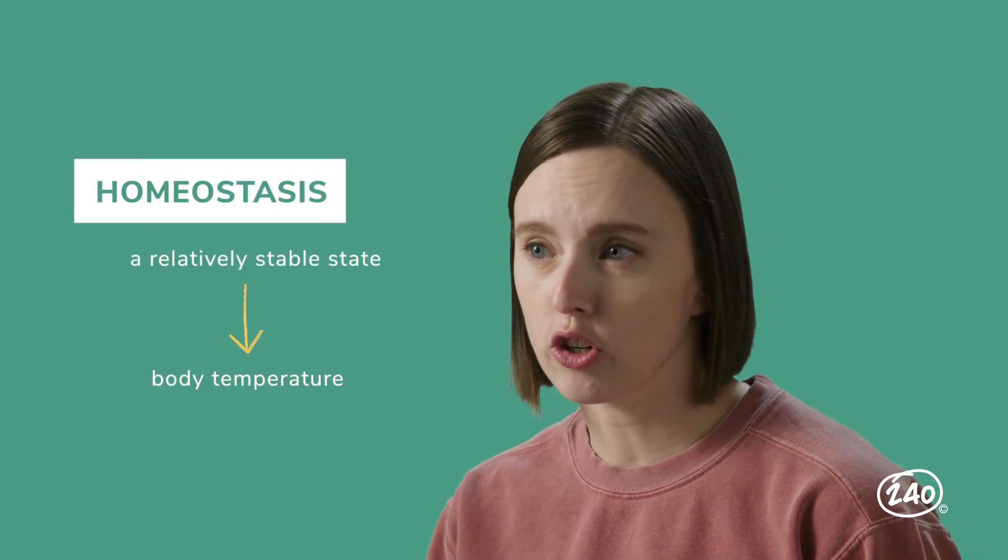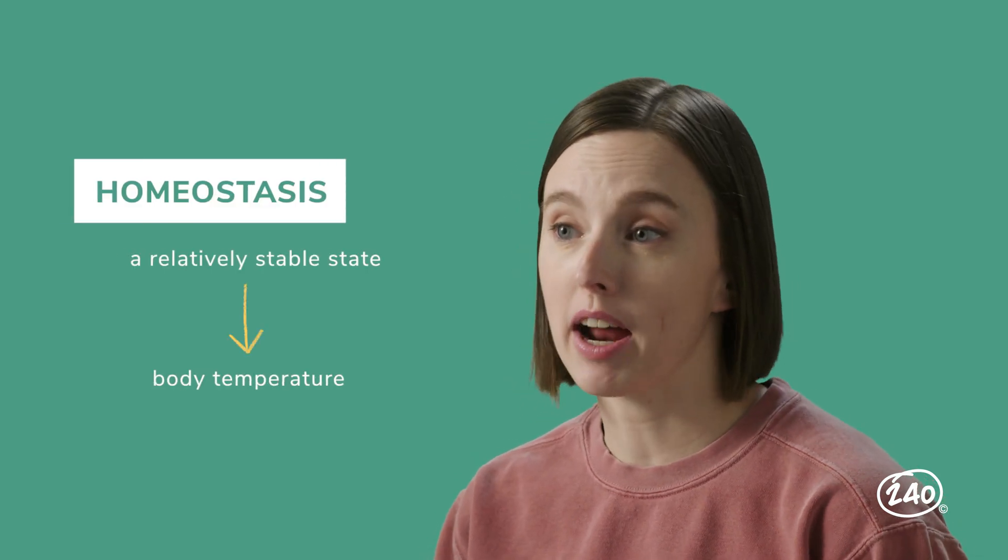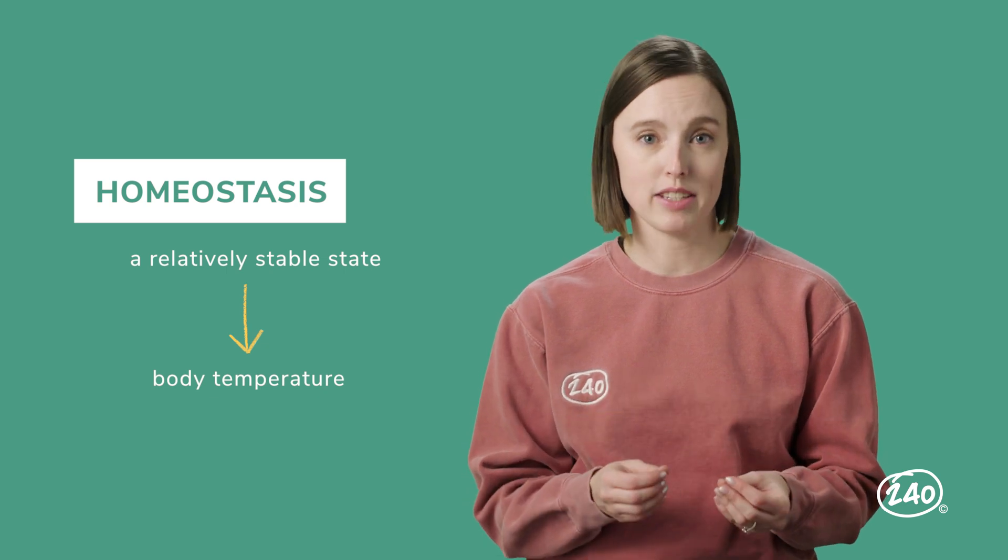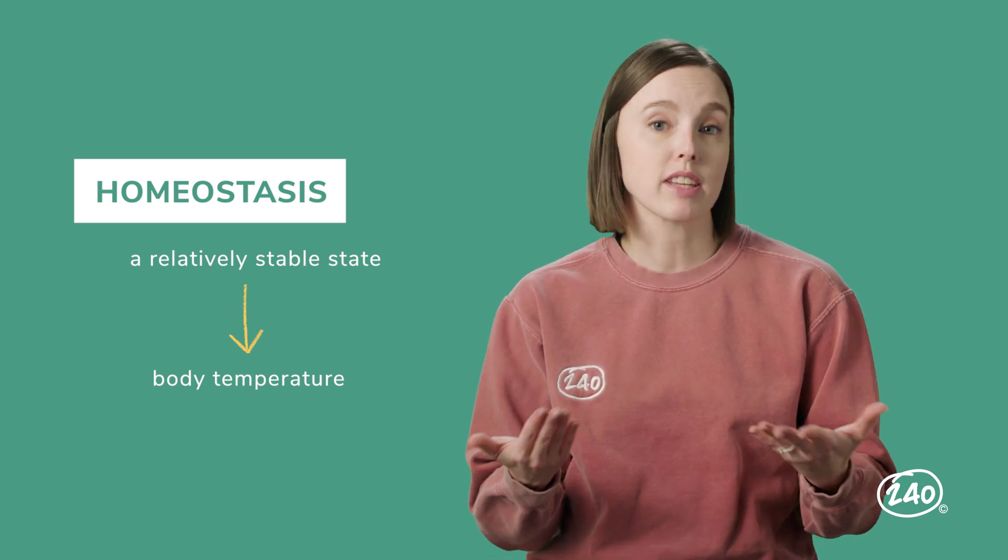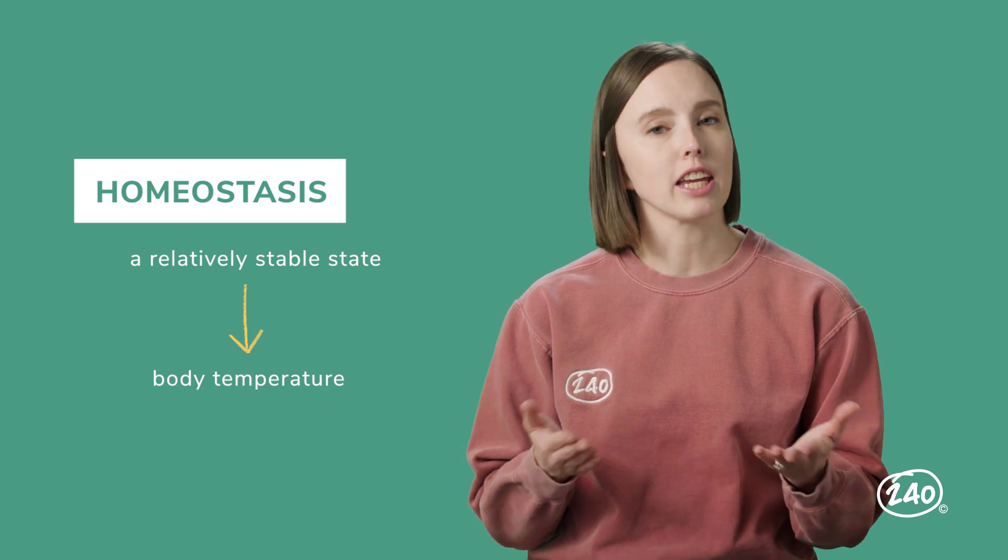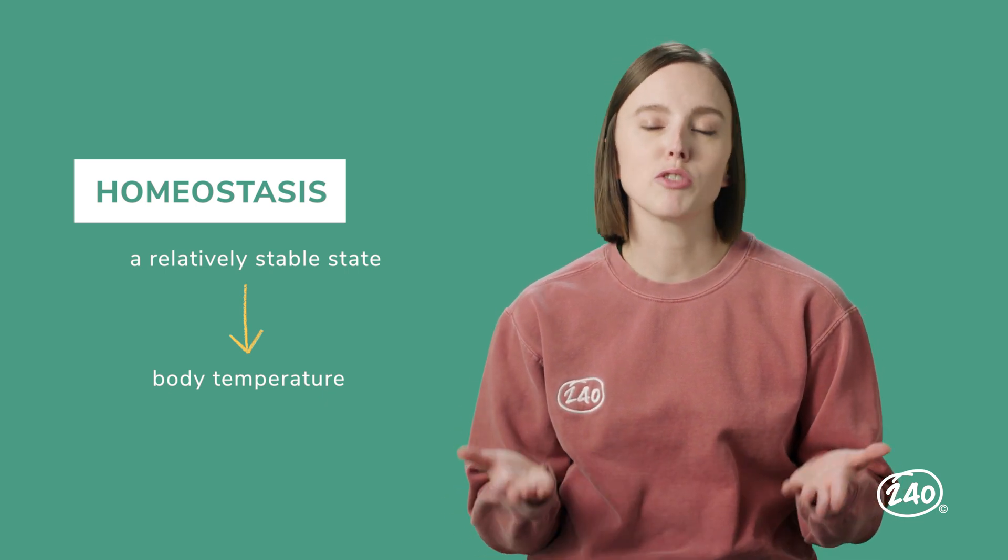For example, the lungs, kidneys, and brain of mammals work together to maintain the ideal pH of the blood. Some organisms use internal energy to remain at the right body temperature. Humans need to maintain a body temperature of 98.6 degrees Fahrenheit. If a person gets too hot, their skin sweats to reduce their temperature. If they get too cold, their muscles shiver to warm up. Fun fact, most mammals have similar adaptations.